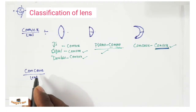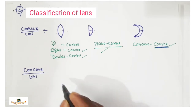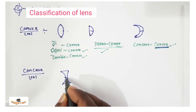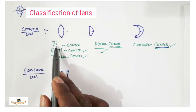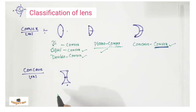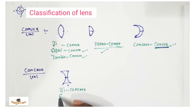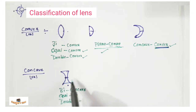Now let's go to the classification of concave lens. A concave lens is thin at the middle and thicker at the edge. If both surfaces are spherical, we can name it as biconcave, or equiconcave, or double concave lens.